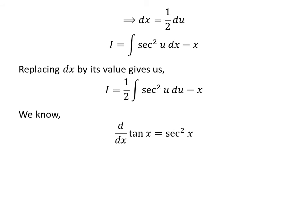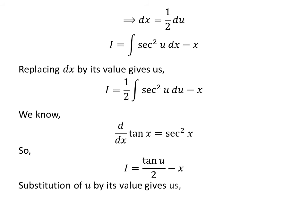We know the derivative of tangent of x is square of secant of x. The video explaining the derivative of tangent of x is appearing in the upper right corner — click on the card to view the step by step explanation. The link is also in the description. So tangent of u is the anti-derivative of square of secant of u, giving us i is equal to tangent of u upon 2 minus x. Substituting u back gives us i is equal to tangent of 2 times x upon 2 minus x plus capital C.